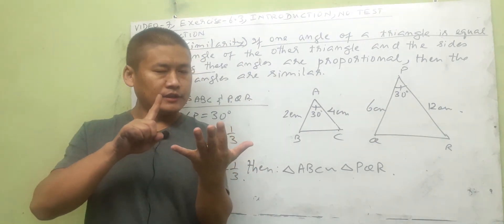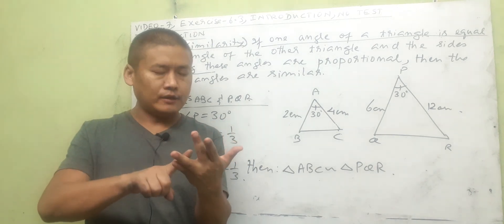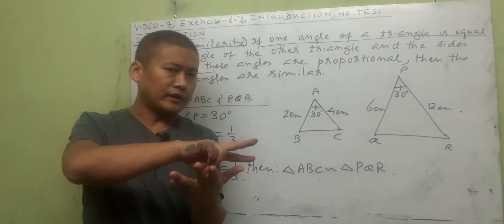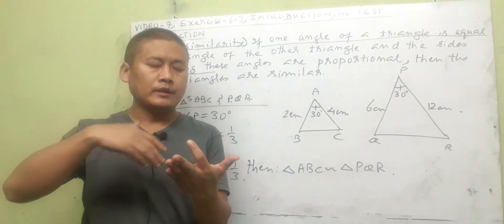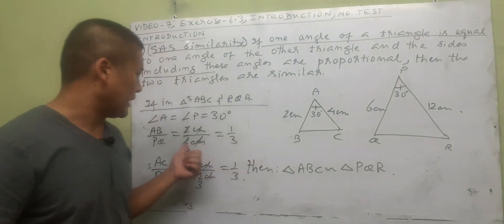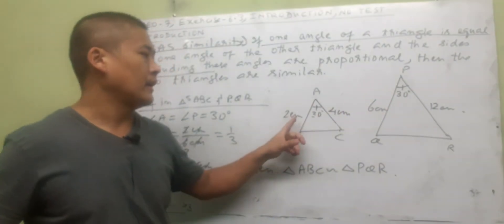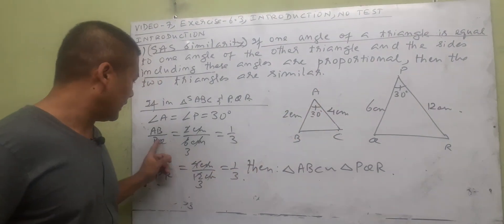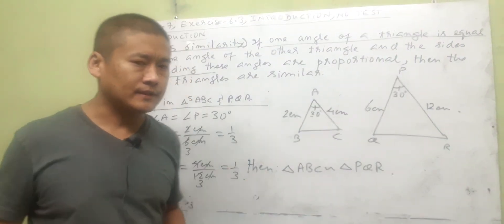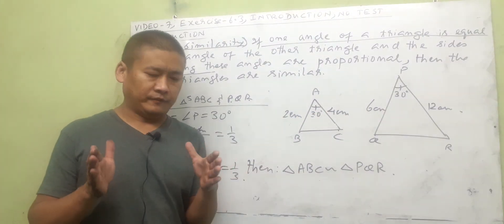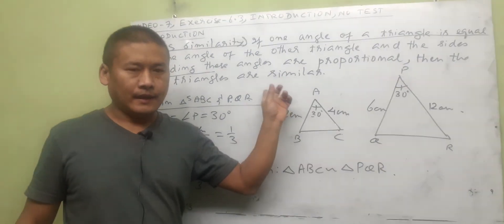To summarize all four similarity criteria: AAA — if all three angles are equal, triangles are similar. AA — if only two angles are equal to two angles of the other triangle, triangles are similar. SSS — if all three sides are proportional, triangles are similar. SAS — if one angle is equal and the sides making those angles are proportional, triangles are similar. Keep these four conditions clearly in mind before solving the exercise sums.